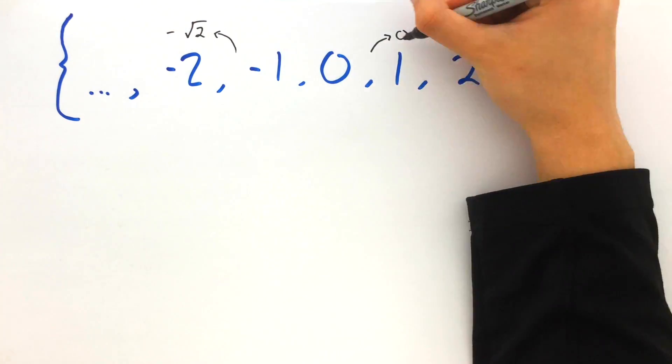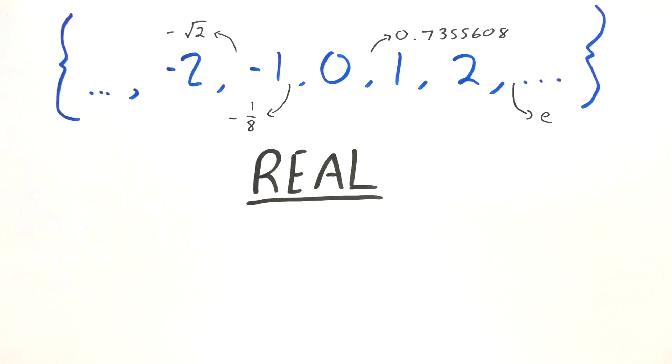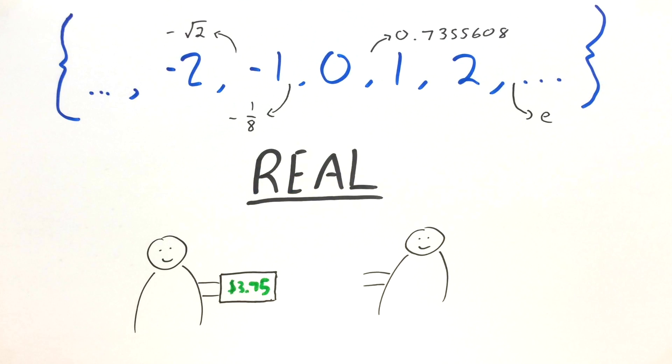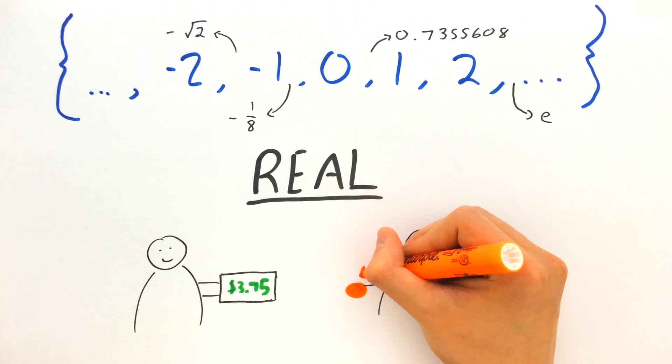But there are still plenty of spaces left in this set. We can fill these in with real numbers, numbers we can visualize. I can owe you 3.75 because you sold me one and a half oranges.